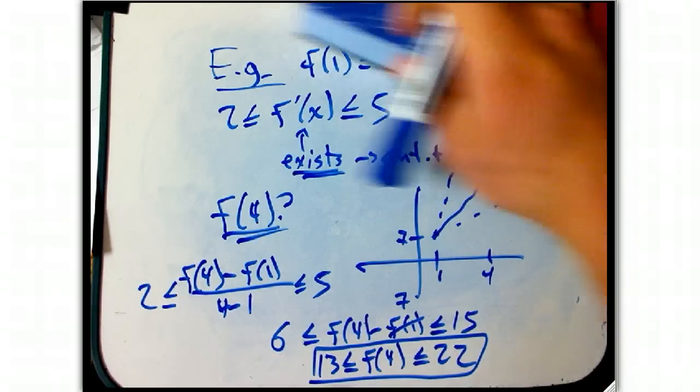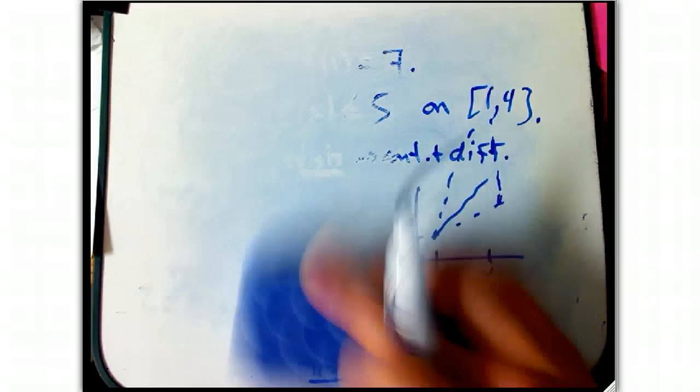So, that's an example of how to use that corollary. That we can predict some function values given information about slopes, and it's actually pretty profound that we can do that, and we have a theorem that says really precisely we can do that.